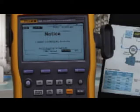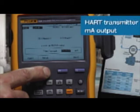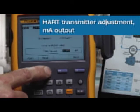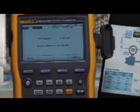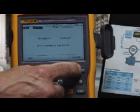First we're going to perform the output trim, fetch the 4 milliamp value, and send to make the adjustment. Continue to adjust the 20 milliamp point, fetch and send.